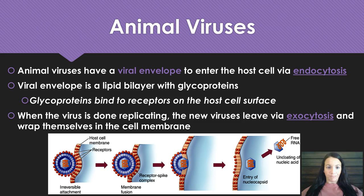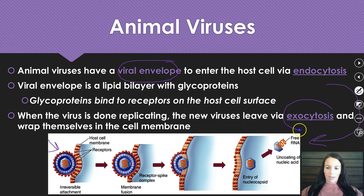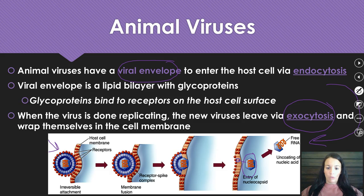Animal viruses in particular have something special called a viral envelope, which helps them enter the host cell through endocytosis. The virus binds to receptors on the host cell site, the envelope forms a fusion, and that's how the virus gets inside. When they're done, the viruses leave through exocytosis — exo meaning exit — and they wrap themselves in the cell membrane as they exit.